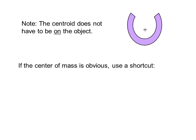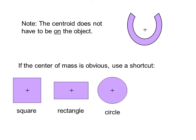If the center of mass is obvious, use a shortcut. For example, for a square, the center of mass is in the middle. Same with a rectangle and a circle. This one's convenient. For a right triangle, the centroid is one-third of the distance away from the right corner. So it's b over 3 in the horizontal direction and h over 3 in the vertical direction.